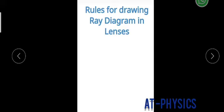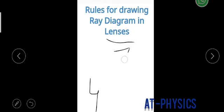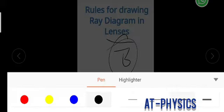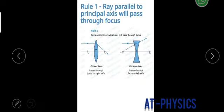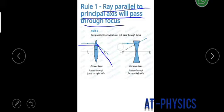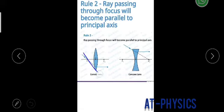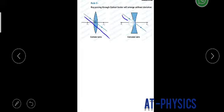Next are the rules for drawing ray diagrams in lenses. There are three rules for lenses — in mirrors there are four rules, but in lenses only three. Rule 1: a ray parallel to the principal axis will pass through the focus (for convex), or for concave, appears to come from the focus. Rule 2: a ray passing through the focus, or going towards the focus, becomes parallel after refraction. Rule 3: a ray going through the optical center passes without any deviation — for both convex and concave lenses.